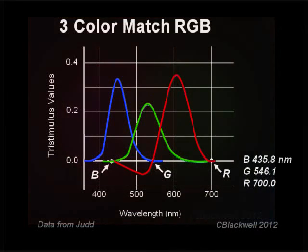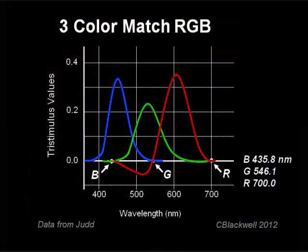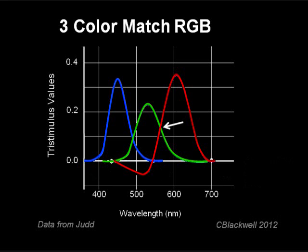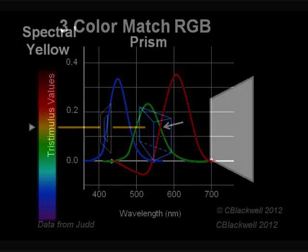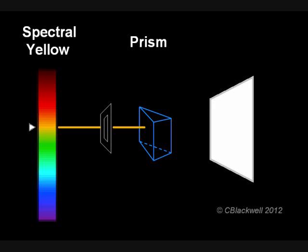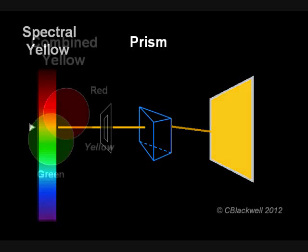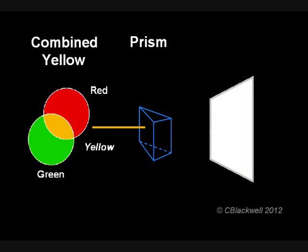If you looked at the previous video about color matching, you recall the formal experiment that demonstrated that by adding various amounts of the primary colors — red, green, and blue — any spectral color could be matched. In the case of yellow, equal amounts of red and green light produced a match to yellow at 580 nanometers. If you pass the single wavelength yellow light through a prism, it will be bent but will remain the same yellow color. But if you pass the red-green mixture through a prism, it will be split into its two components. Pretty cool.